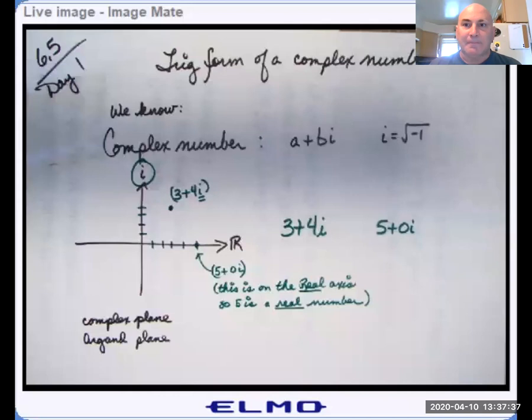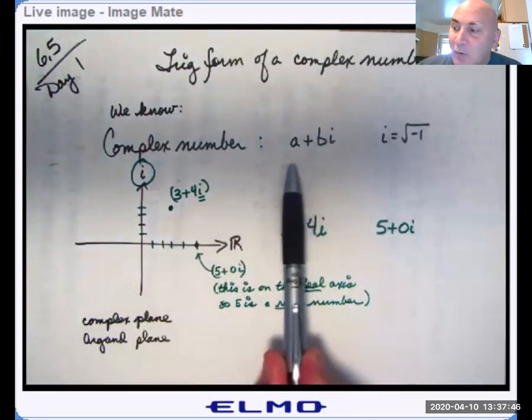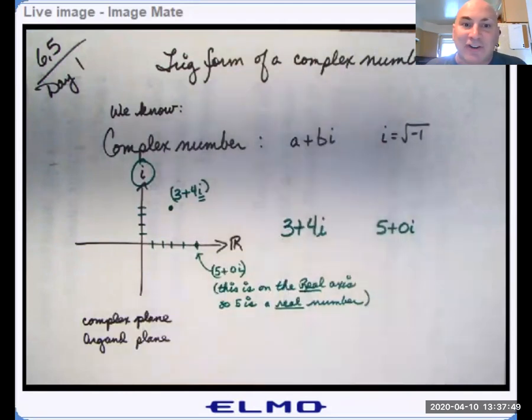I still have my Corona cough. So today we're going to learn to write complex numbers a different way. We're not going to write them in terms of A and B anymore. They're not going to be A plus B I. We're going to write them in a new way. And that new method is called trig form or sometimes polar form. Let me share my screen here. Here we go.